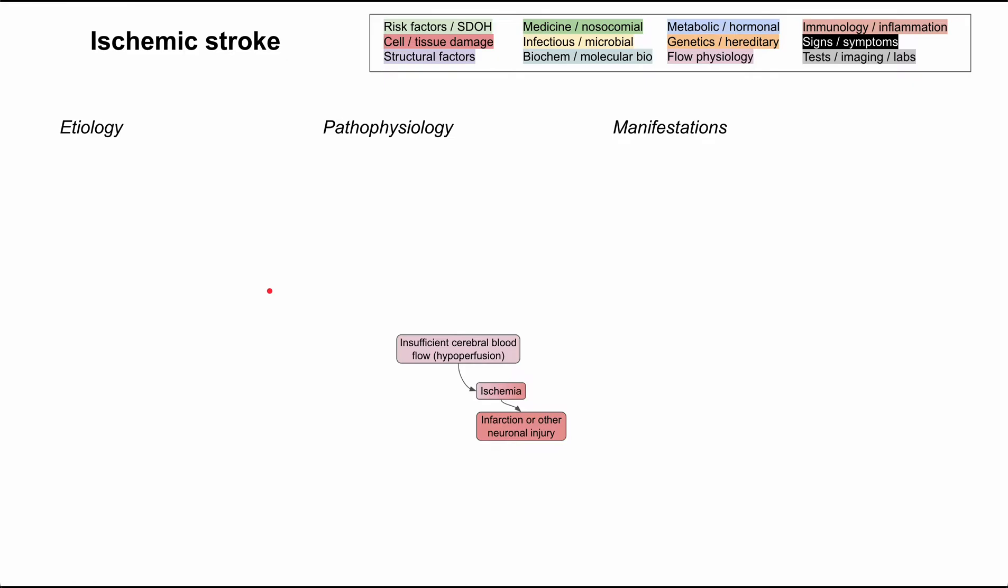So let's talk briefly about the pathophysiology of ischemic stroke. I mentioned that it's caused by insufficient cerebral blood flow, hypoperfusion of the brain. And this is in contrast to hemorrhagic strokes where you have bleeding into the brain. That can be an intracerebral hemorrhage or a subarachnoid hemorrhage. This type is when you don't have enough blood going to the brain.